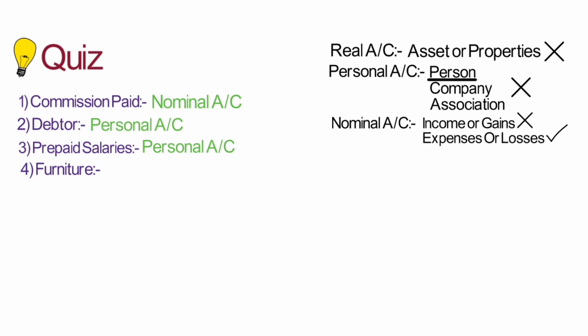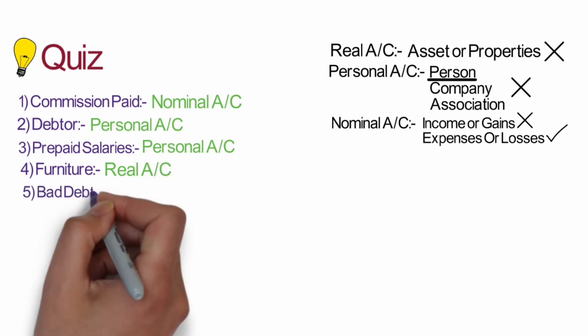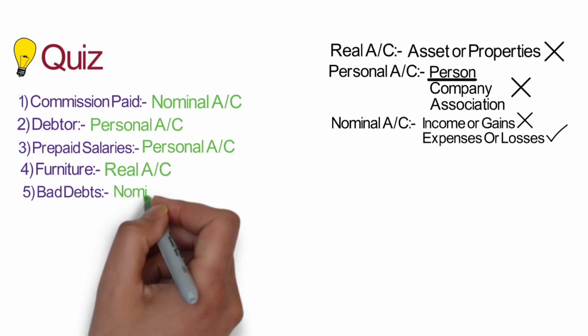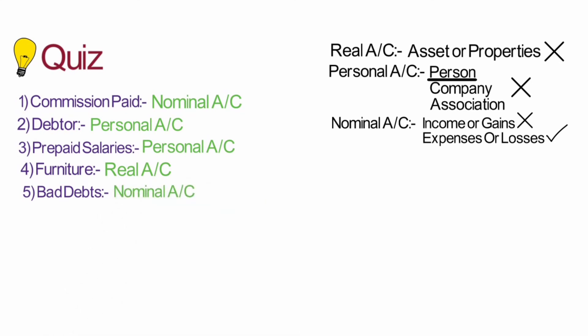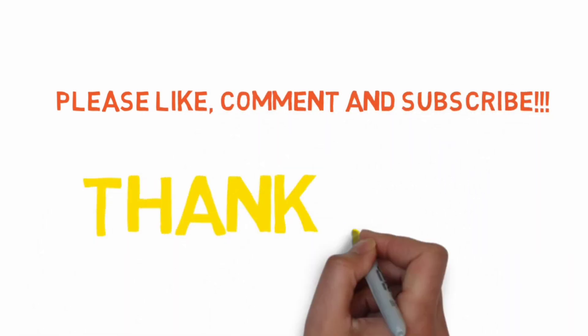Bad debts — bad debt is the amount which is irrecoverable, so it is a loss for the business. Expenses or losses fall under the category of nominal account, so bad debts are a nominal account. Hope you have understood all three types of accounts. In the next video, we will discuss rules for recording transactions. Please like, comment, and subscribe. Thank you.